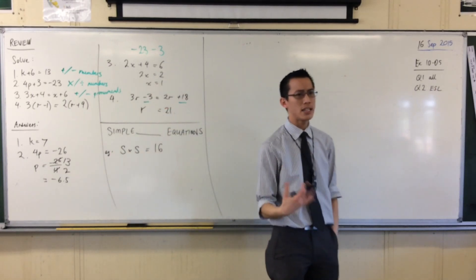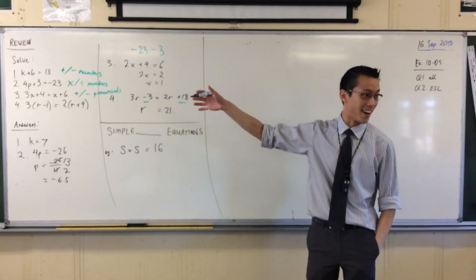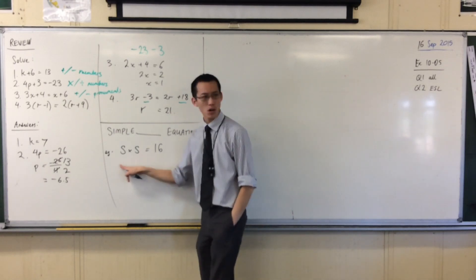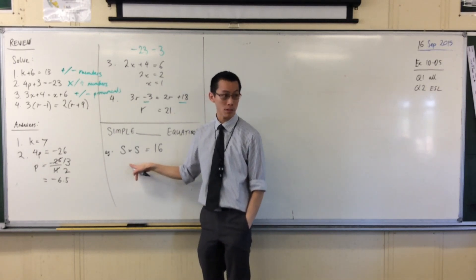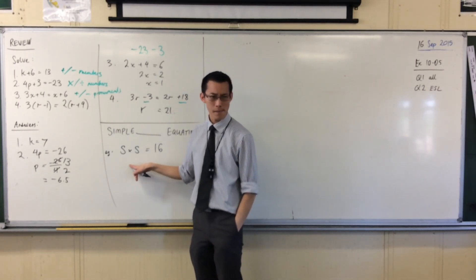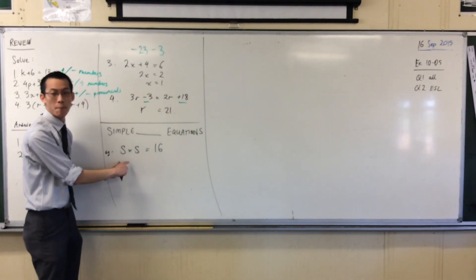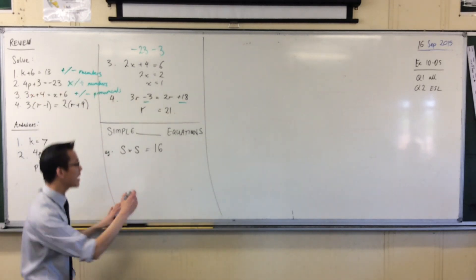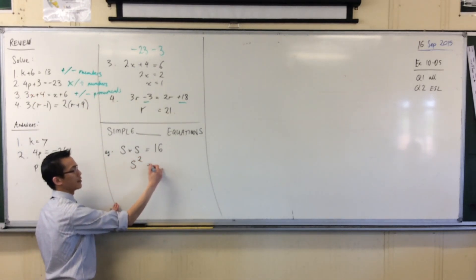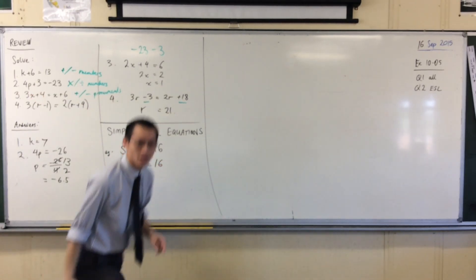We already developed some language earlier this year to write this in a more concise form. Do you remember what language we used? Started with an I. Index form, right? Very good. So S times S. I'm multiplying S by itself twice, so I write S squared. Okay, now, Adam, yes?